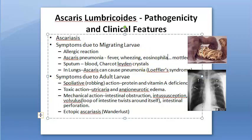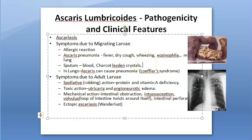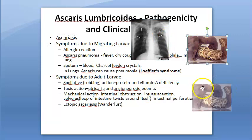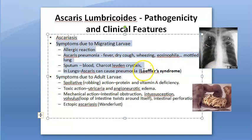Eosinophilia is an important finding. The sputum is blood-tinged and may contain Charcot-Leyden crystals. The larva may occasionally be found in the sputum and is often seen in gastric washings. This condition is called Löffler syndrome and should be remembered. These clinical features due to migrating larvae generally clear in one to two weeks but may be severe or even fatal.